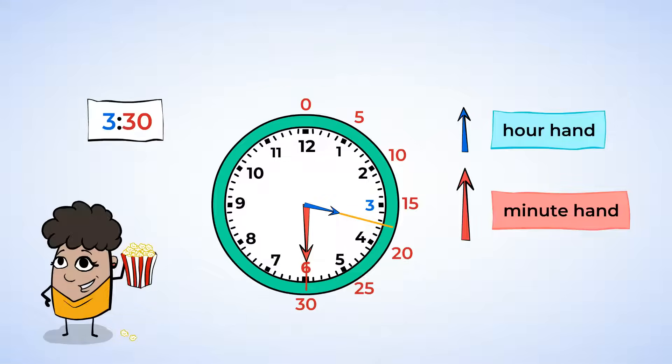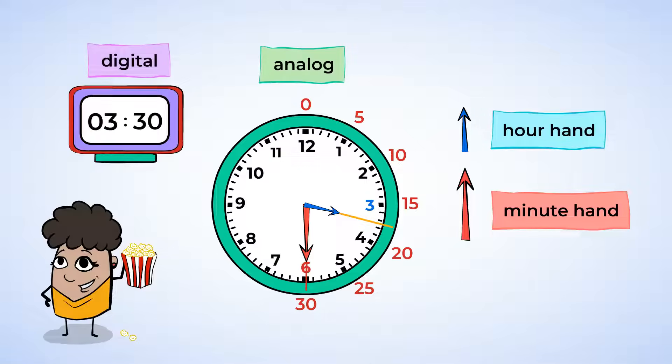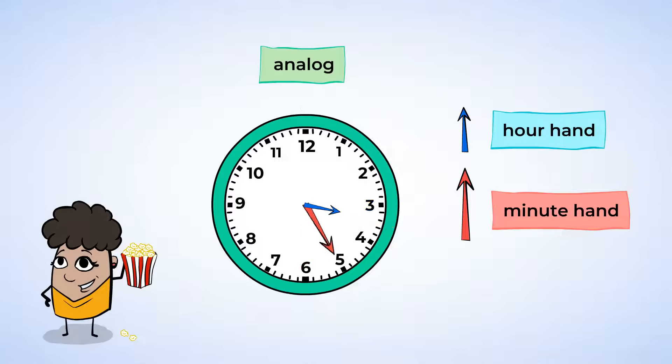And now we know how to read an analog and a digital clock. Right, except that it isn't yet 3:30. This is the actual time. So let's figure out what time it is. First, look at the hour hand. Okay, the hour hand is still pointing between the 3 and the 4. And that means the hour is 3.